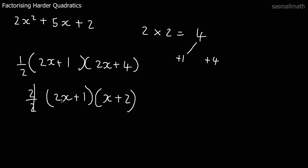And we'll expand that just to prove it. Two x times x, two x squared. Two x times two, plus four x. One times x, x. One times two, plus two. And I think you can see that's five x. Two x squared plus five x plus two. So we're back to where we started.